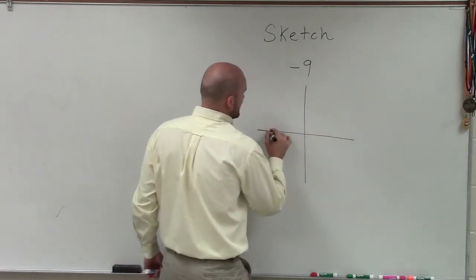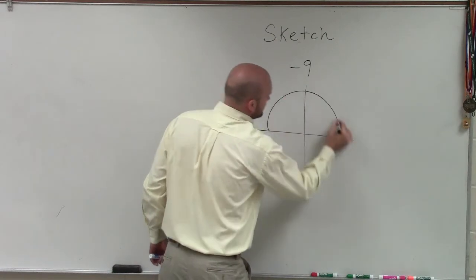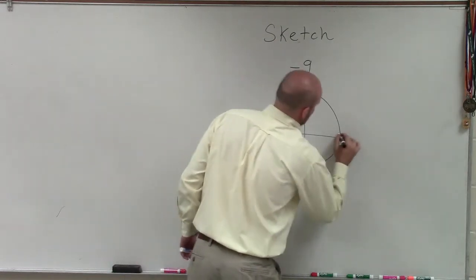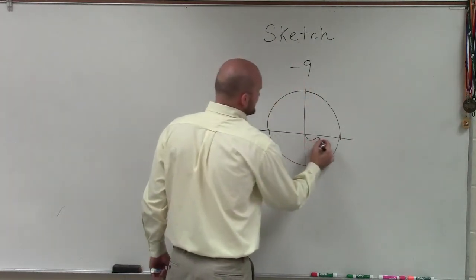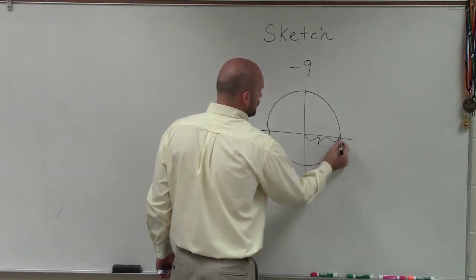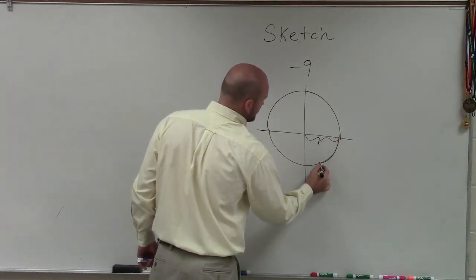So therefore, I need to again remember, well, what is a radian? A radian, remember, is the distance of the radius wrapped around your circle.